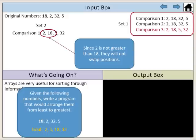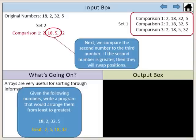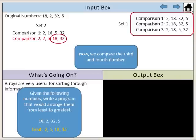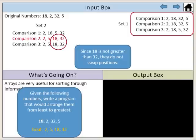Since 2 is not greater than 18, they will not swap positions. Next, we compare the second number to the third number. If the second number is greater than the third number — since 18 is greater than 5, they will swap positions. Since 18 is not greater than 32, they do not swap positions.